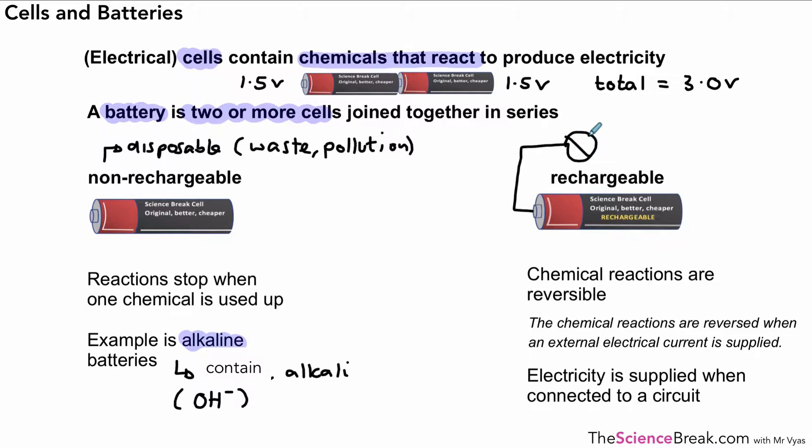Electricity is supplied when connected to a circuit. So in other words, if we connect this to a circuit here, for example with a lamp in it, that lamp will light up. And then when the battery runs out, we can then charge it by reversing those chemical reactions by connecting it to an external electrical current.